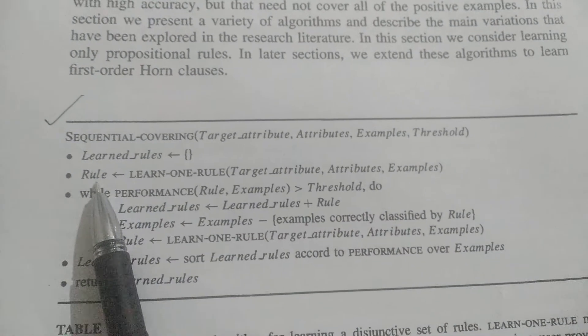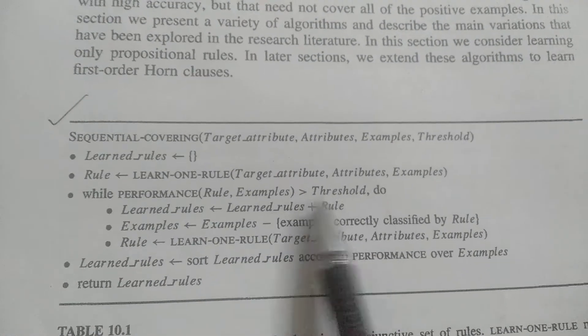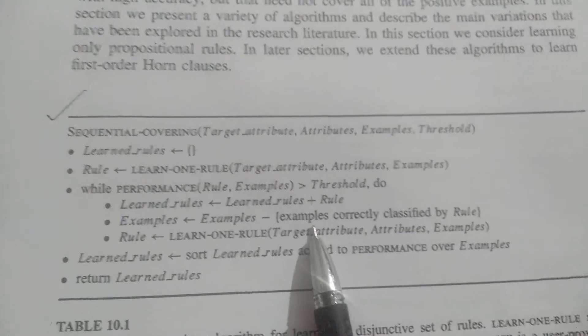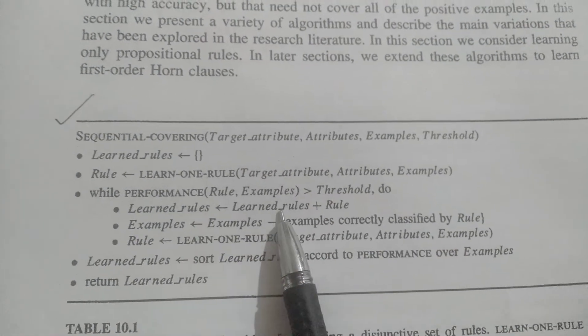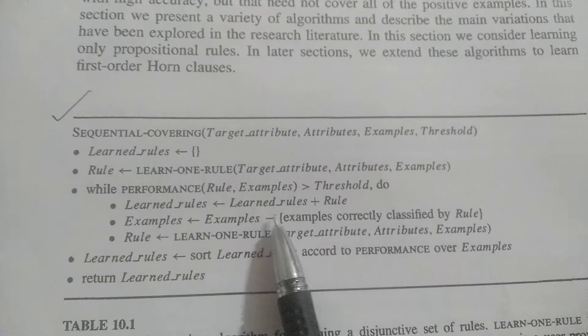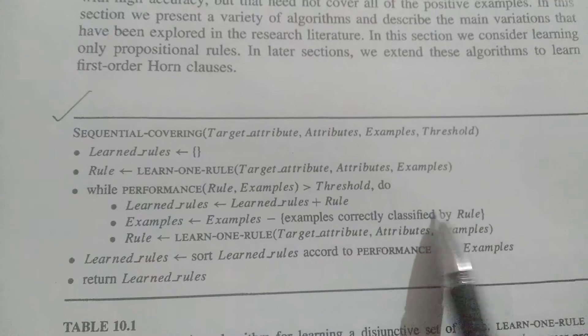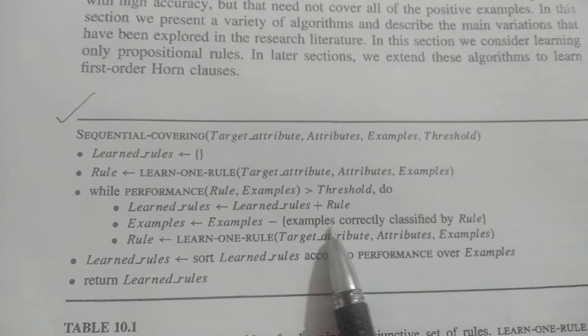After finding one rule, I check if its performance is greater than the threshold. If so, I enter the while loop and add that rule to learned rules. Then examples equals examples minus examples correctly classified by the rule. I delete those examples which came under the previous rule.